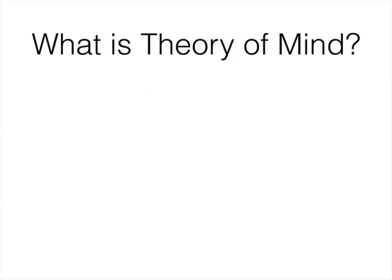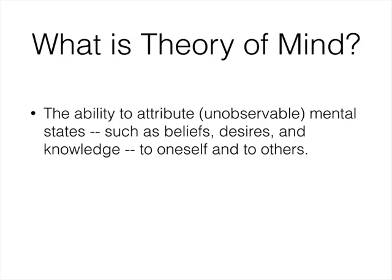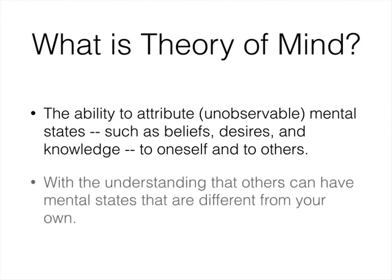Philosophers and researchers have called this general process of theorizing about other people's mental states a theory of mind, broadly defining it as the ability to attribute beliefs, desires, and knowledge to oneself and to others, with the understanding that other people can have mental states that are different from your own.